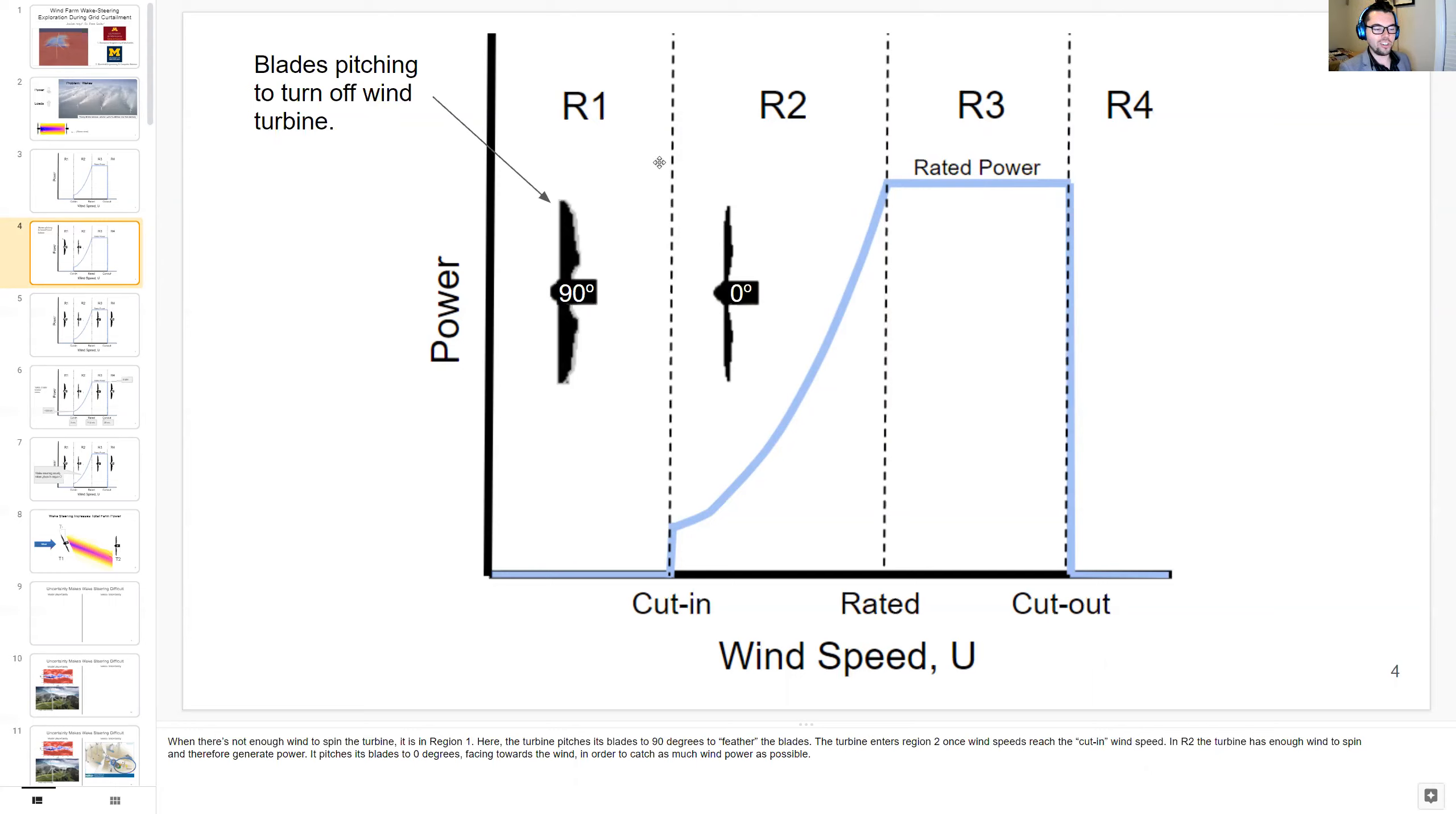The turbine enters region 2 once wind speed reaches the cut-in wind speed. In region 2, the turbine has enough wind to spin and therefore generates power. It pitches its blades to 0 degrees facing towards the wind in order to catch as much wind power as possible.